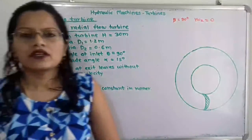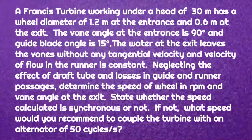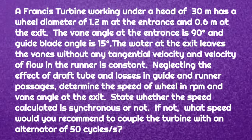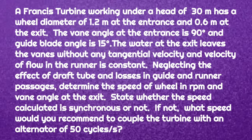The given problem: a Francis turbine working under a head of 30 meters has a wheel diameter of 1.2 meters at the entrance and 0.6 meters at exit. The vane angle at the entrance is 90 degrees and guide blade angle is 15 degrees. The water at exit leaves the vanes without any tangential velocity, and the velocity of flow in the runner is constant. Neglecting the effect of draft tube and losses in guide and runner passage, determine the speed of the wheel in RPM and the vane angle at exit. State whether the speed calculated is synchronous or not, and if not, what speed would you recommend to couple the turbine with an alternator of 50 cycles.